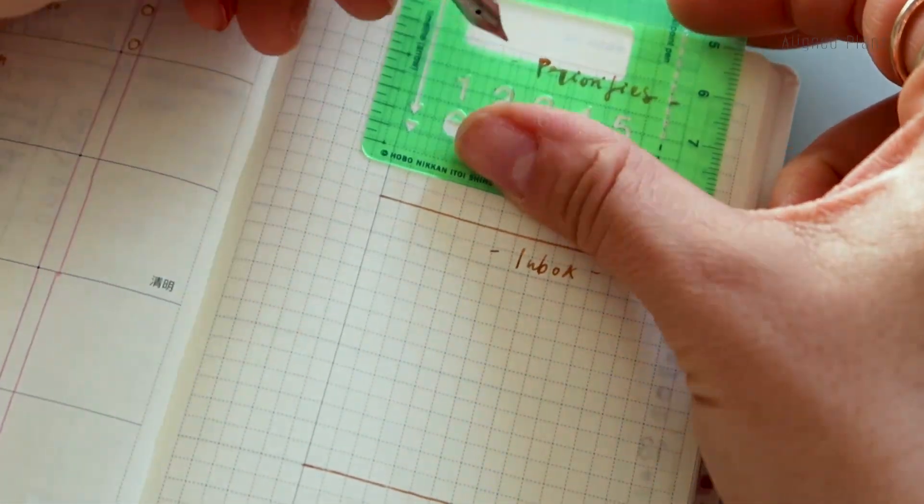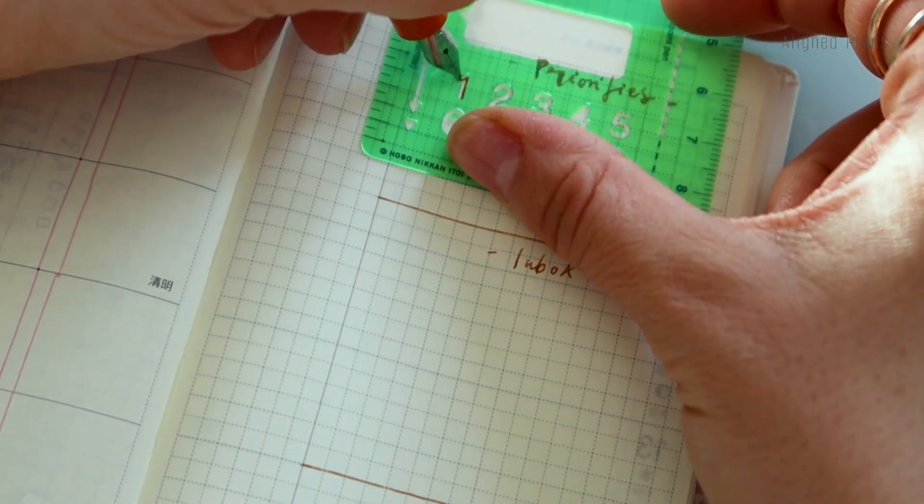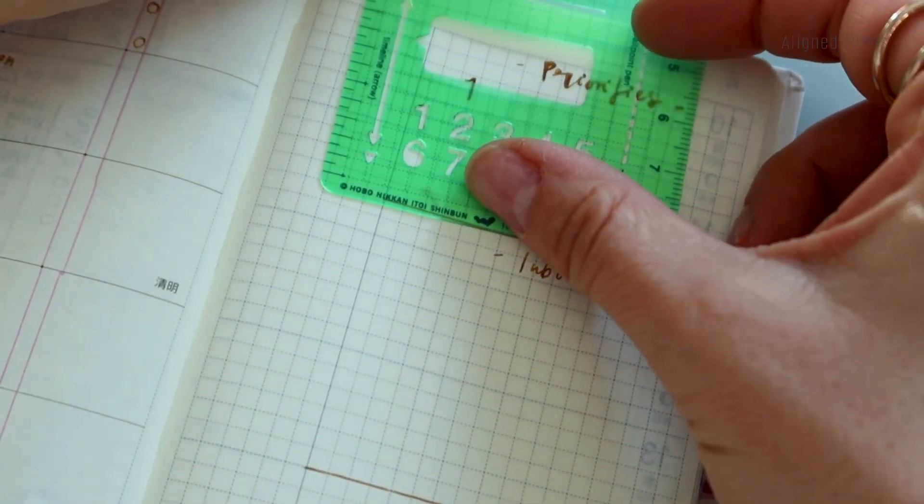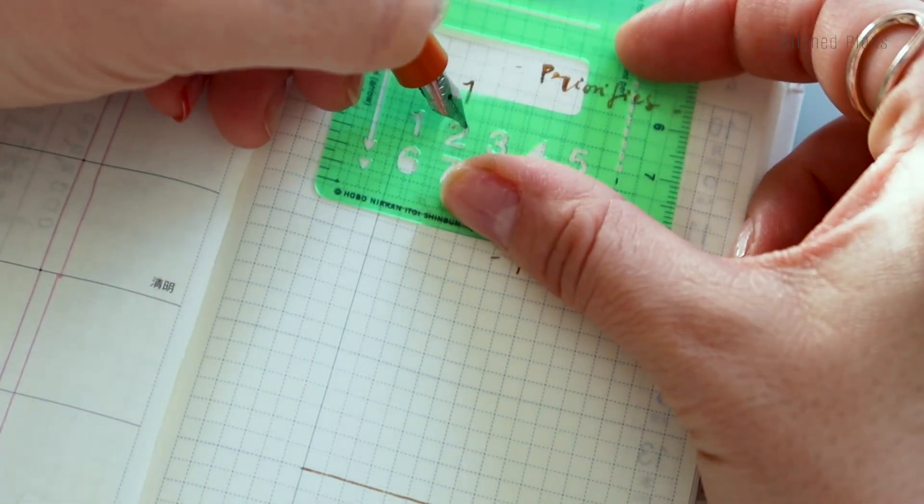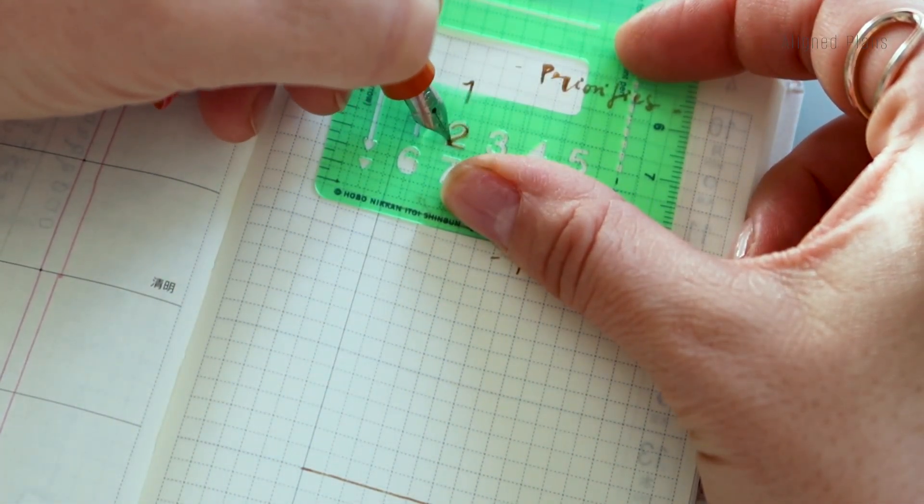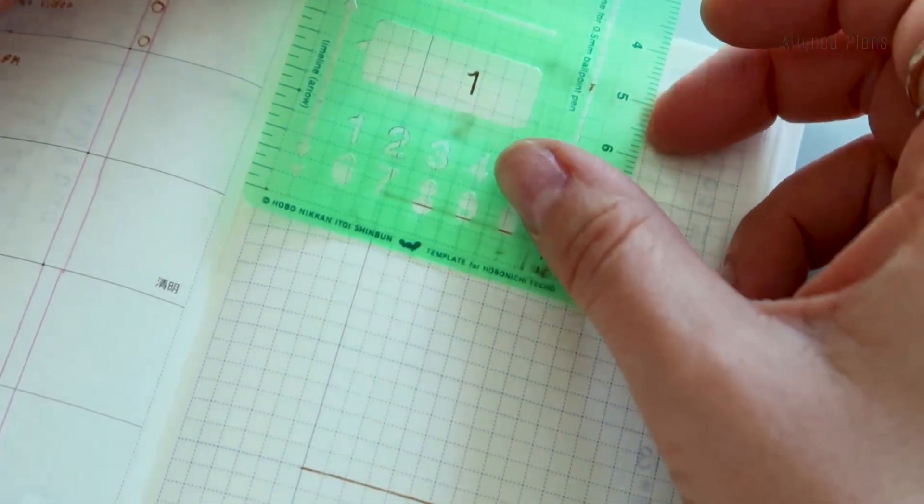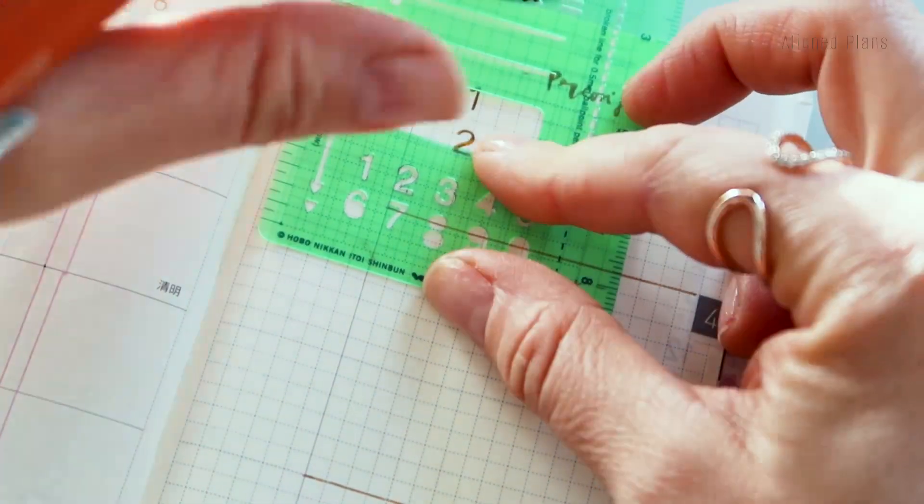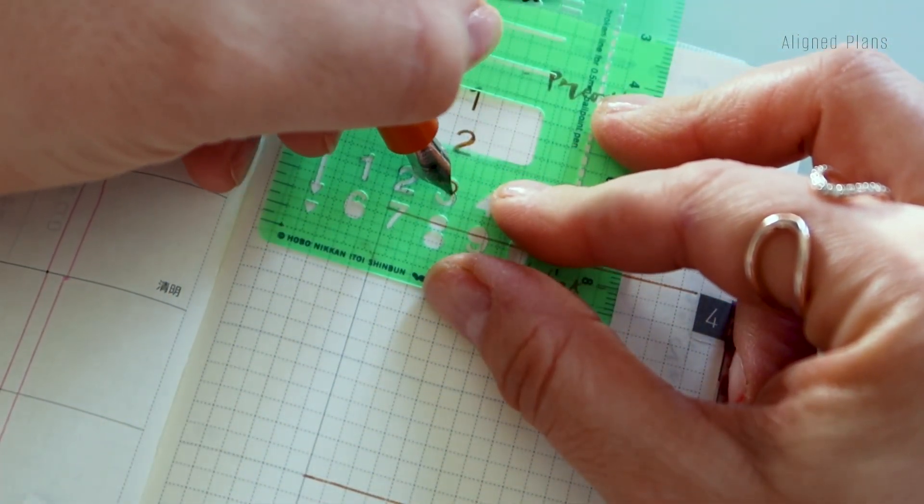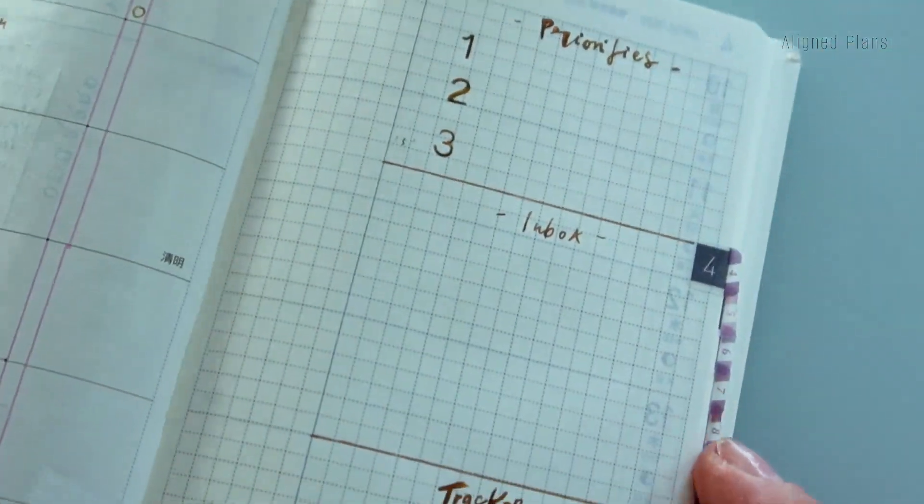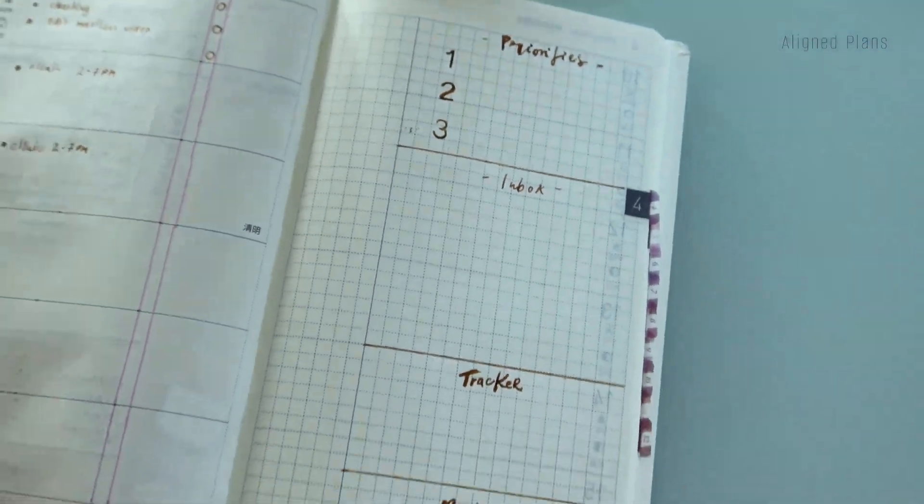So here I'm just grabbing my stencil, going back onto the right hand side, and we're just using the stencil to write in the top three priorities. I've been really loving these stencils from Hobonichi. It has been one of the most useful tools. If you haven't picked it up, I would highly recommend it.